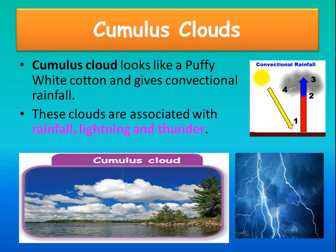A convectional rainfall is when the energy of the sun heats the surface of the earth and makes the water evaporate in the form of water vapour. When the land heats up, it warms the air above it. As the air rises, it cools and condenses, forming condensation clouds, giving convectional rainfall. These clouds are associated with rainfall, lightning and thunder. Thunder is a sound caused by lightning, which is a giant spark of electricity in the atmosphere between the clouds, the air or the ground.